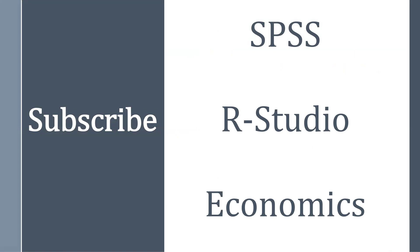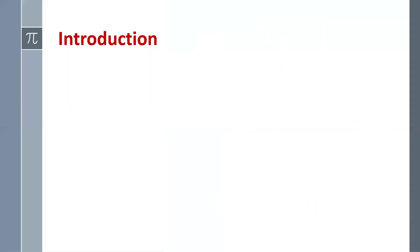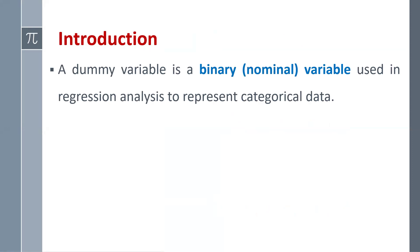So don't forget to subscribe and press the bell icon. Let's begin with the meaning of dummy variable. A dummy variable is a binary variable used in regression analysis to represent categorical data. We are interested to incorporate categorical data in our regression analysis through dummy variables.